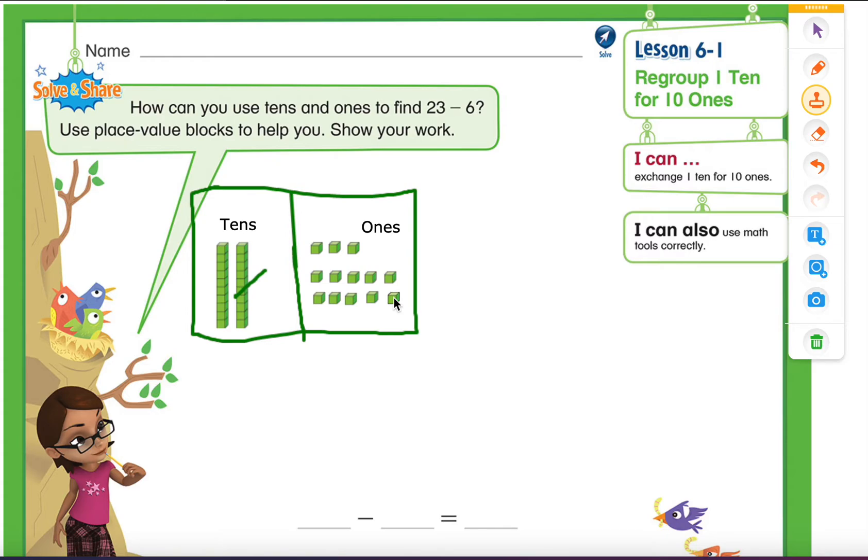So basically, we just regrouped our 1 ten into 10 ones. And why did we do that? Because the number that we are subtracting from this number does not have enough ones. So we needed to regroup. So now we can take away 6 out of it. So let's grab our pen.